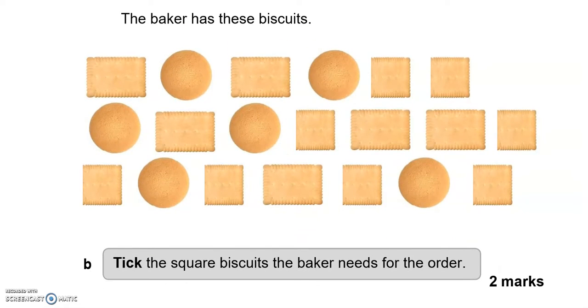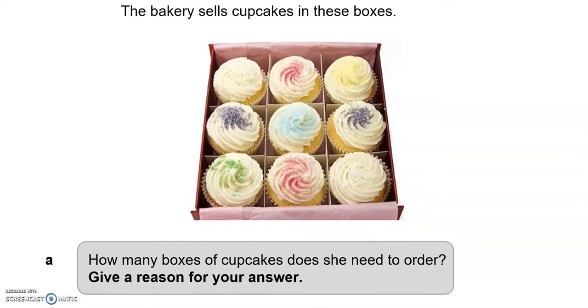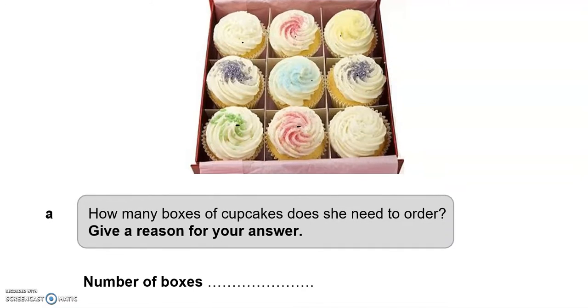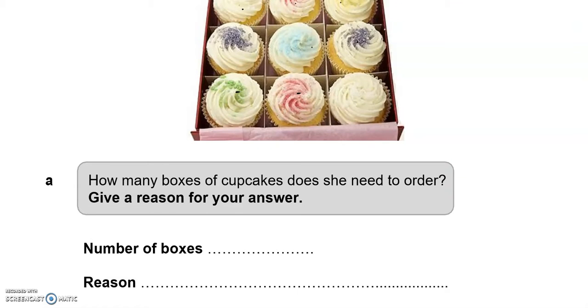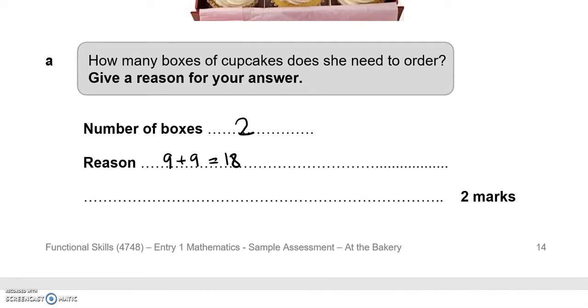The baker has these biscuits. Tick the square biscuits the baker needs for the order. The bakery sells cupcakes in these boxes. How many boxes of cupcakes does she need to order? Give a reason for your answer. So this has 1, 2, 3, 4, 5, 6, 7, 8, 9. The number of boxes should be 2. The reason: because 9 and 9 equals 18. So just 1 box is not enough.